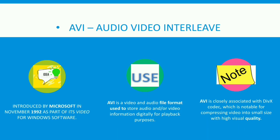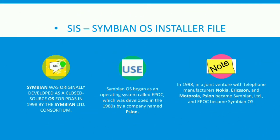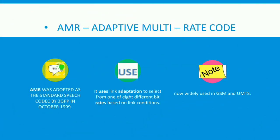The second topic is SIS — Symbian OS Installer File. Symbian was originally developed as a closed-source OS for PDAs in 1998 by the Symbian Limited consortium. Symbian OS began as an operating system called EPOC, developed in the 1980s by a company named Psion. In 1998, in a joint venture with telephone manufacturers Nokia, Ericsson, and Motorola, Psion became Symbian Limited and EPOC became Symbian OS.